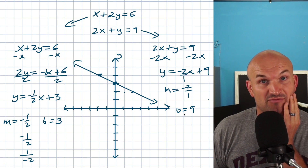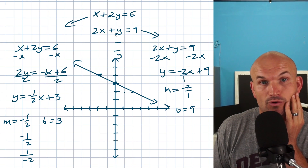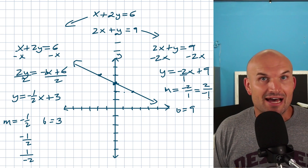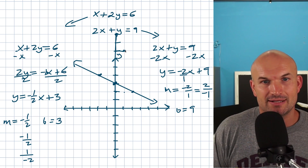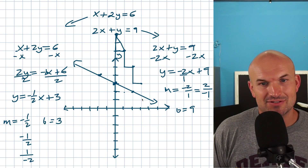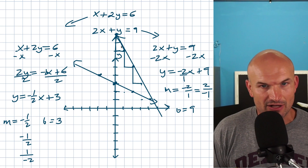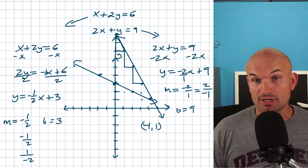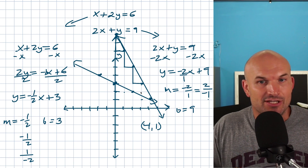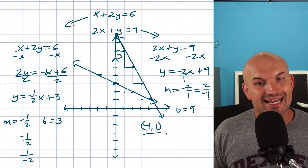Now graphing the second equation with y-intercept at 9. For a slope of negative 2 over 1 I want to go down and to the right: down 2 to the right 1, repeated several times. Using a slope triangle helps visualize this. Following the slope down 2 to the right 1 repeatedly, I can draw the line. You can see the two lines intersect at the point (4, 1) — that's our solution to the system. Just follow the slope, find the y-intercept first, then follow the slope to find the intersection.